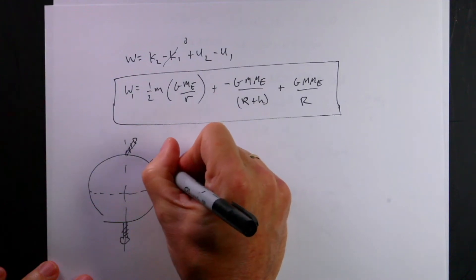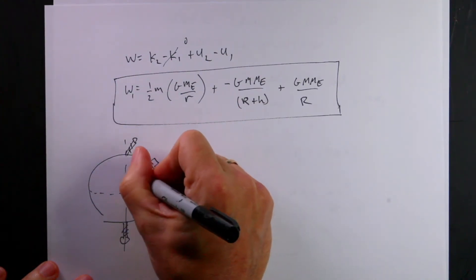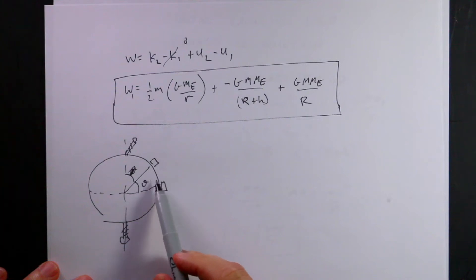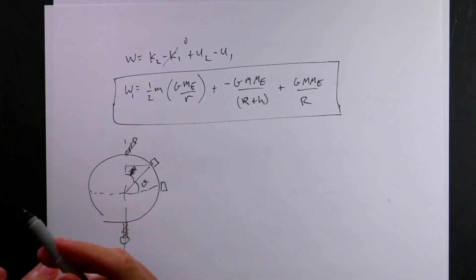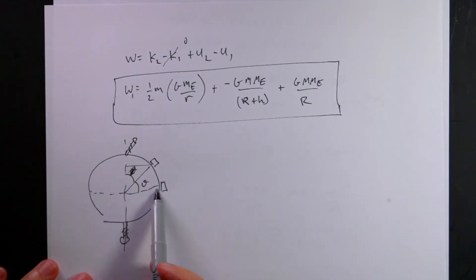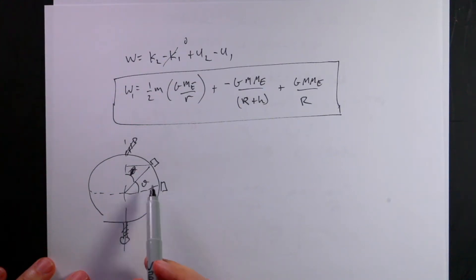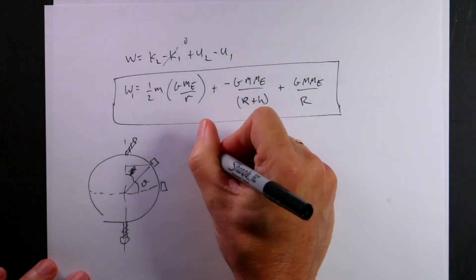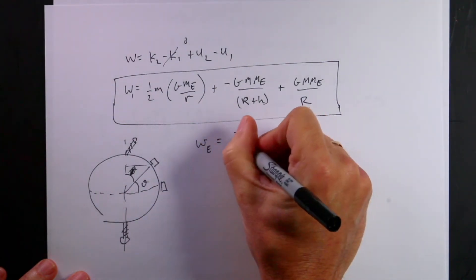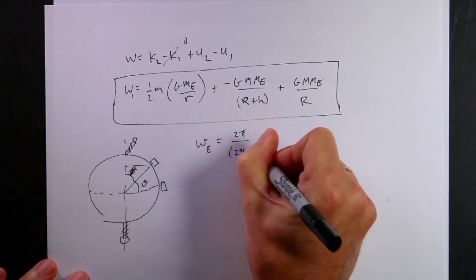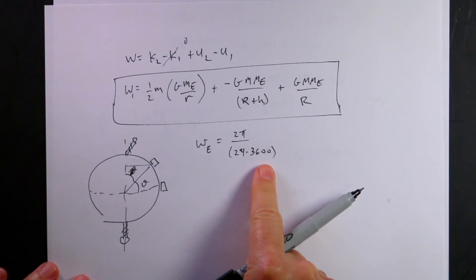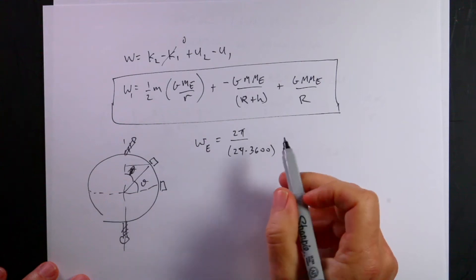Let's do it generically using the angle theta — the latitude, which is the angle above the equator. As theta increases, I'm moving in a circle whose size gets smaller and smaller. At theta equals zero, the circle has the radius of the Earth; at the North Pole, the circle size is zero. The angular velocity of the Earth, omega_E, is 2π radians divided by 24 times 3600 seconds — that's one day. This uses a 24-hour day, which isn't perfectly accurate, but it's good enough.